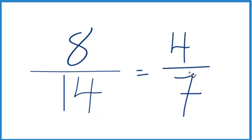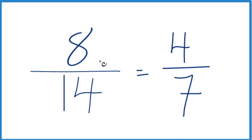You should also note that 8 divided by 14 and 4 divided by 7 are equivalent — they'll give you the same decimal value. It's just that we've simplified 8/14 down to lowest terms. This is Dr. B. Thanks for watching.